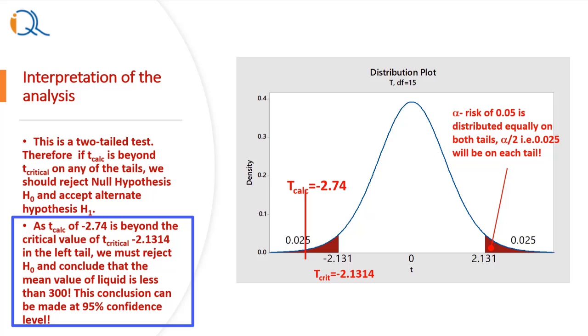As T calculated of minus 2.74 is beyond the critical value of T critical minus 2.1314 in the left tail, we must reject H0 and conclude that the mean value of liquid is less than 300. We say less than because the T critical is negative and T calculated is also negative. This conclusion can be made at 95% confidence level.